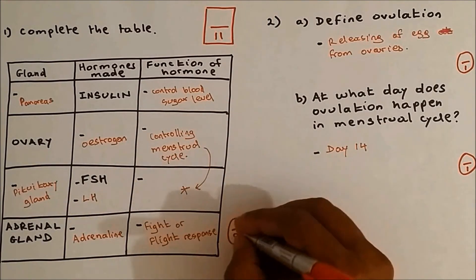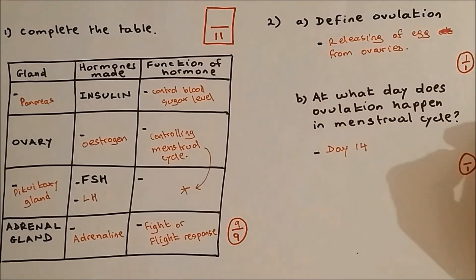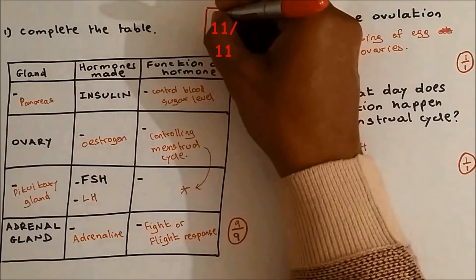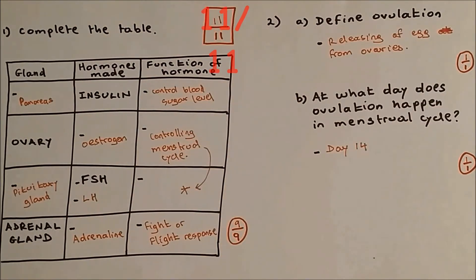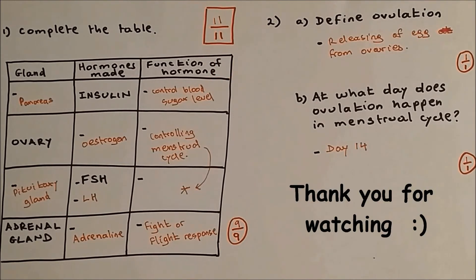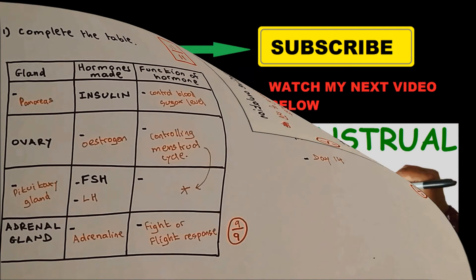The total marks for the table is nine out of nine. Question 2a is one mark, and 2b is also one mark, so everything adds up to 11. Well done if you got 11 out of 11! If you think you need more knowledge on this topic, please go and watch my teaching video. My next teaching video will be on the menstrual cycle. Please make sure to subscribe, like, and comment. I'll see you in my next video — thank you very much!